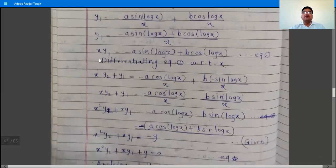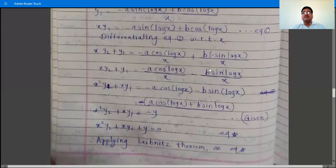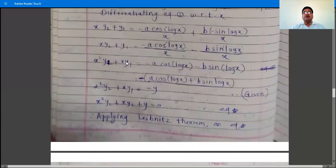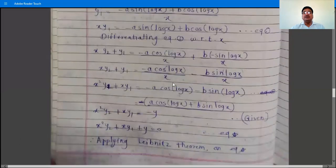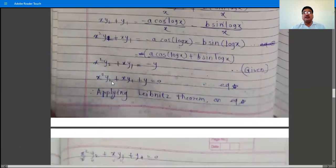Differentiating x·y₁ with respect to x: by the product rule, x·y₂ + y₁ = −a·cos(log x)/x + b·(−sin(log x)/x). Multiplying through by x gives x²y₂ + x·y₁ = −a·cos(log x) − b·sin(log x). Taking out the minus sign gives a·cos(log x) + b·sin(log x), which equals y. Substituting and shifting y to the LHS gives x²y₂ + x·y₁ + y = 0.